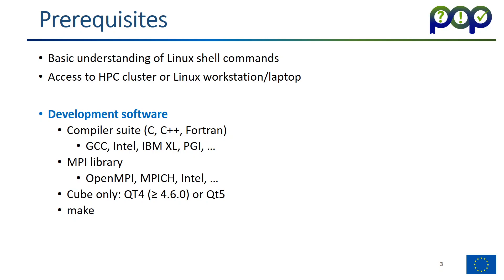You need access to a Linux workstation or laptop in order to do the installation and you should have a basic understanding of Linux shell commands. The Linux system should have the usual development software installed like C, C++, and Fortran compilers — this can be any sort like GNU compilers, Intel, IBM, PGI, or any others. An MPI library like OpenMPI, MPICH, Intel, or any other. And for our Cube tool we need a graphics library called Qt, either version 4 or version 5. And of course you need installation tools like Make and the usual POSIX shells.